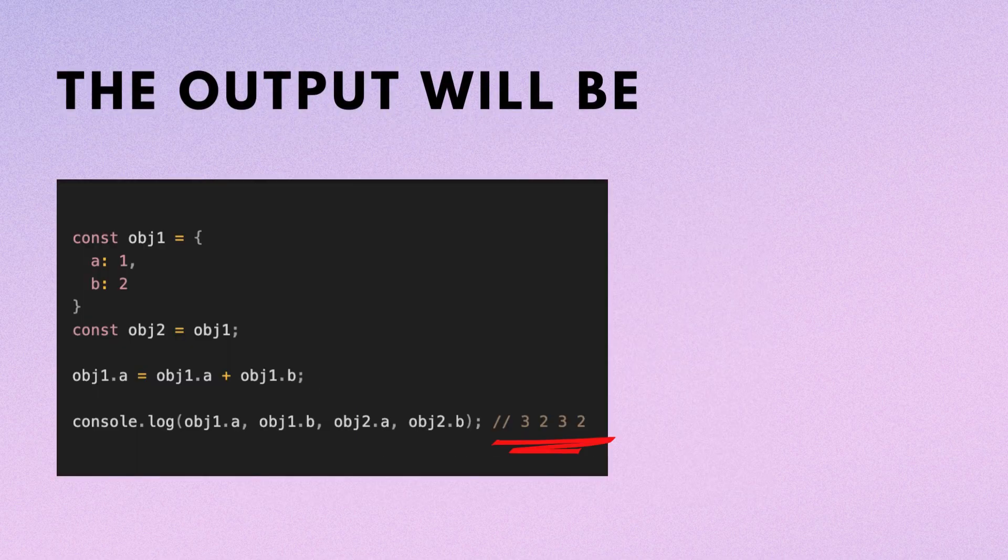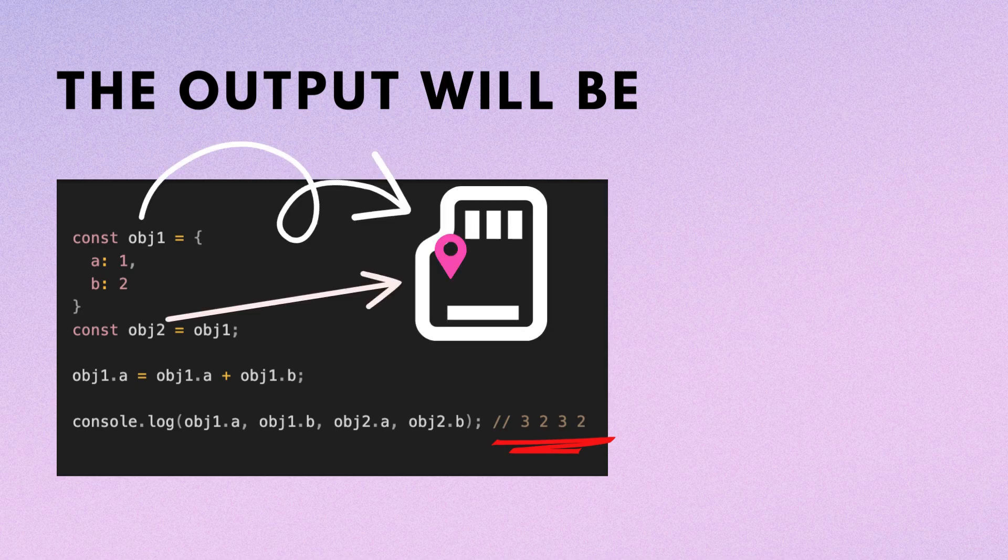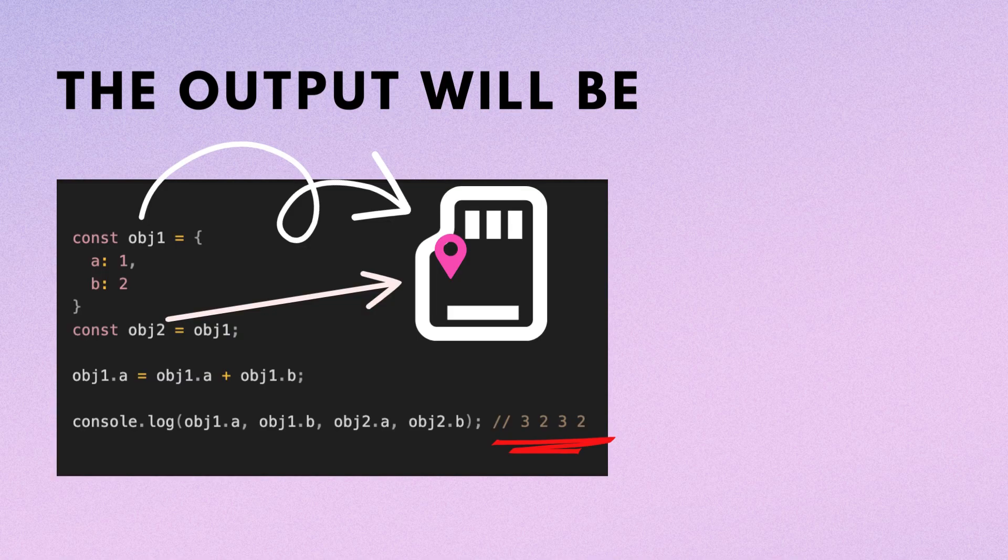The output will be 32 32, since object 2 shares the same reference as object 1. Changes in object 1 are reflected in object 2.